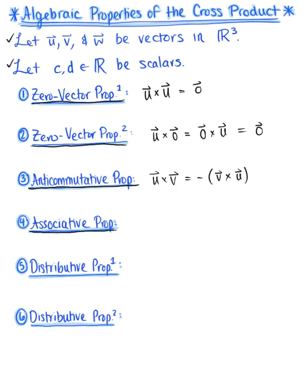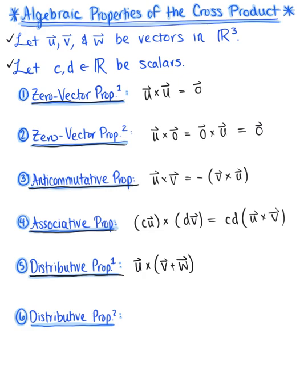Property number four is our associative property. This tells us that if we take the cross product of two scalar multiples — say c times vector u crossed with d times vector v — this is equivalent to grouping those scalars c times d and multiplying by the cross product of vector u with vector v. The fifth property is the first of two distributive properties: vector u crossed with the sum of vector v and vector w equals the sum of (u cross v) plus (u cross w).